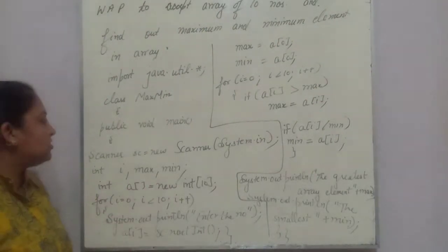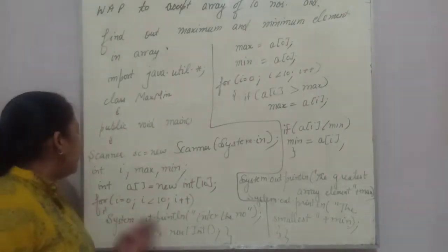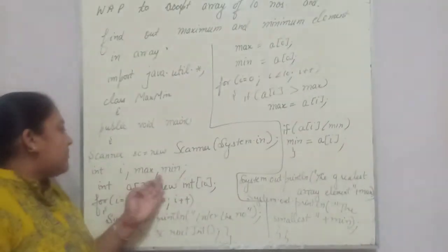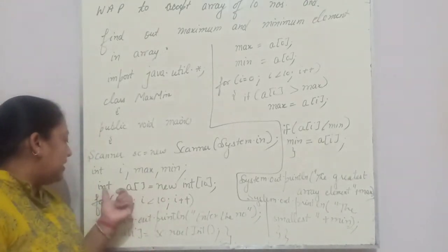I have written main method also. Through Scanner class I will input, that's why I have used Scanner class. Then I will write int max, min. So in this way I have declared array a.